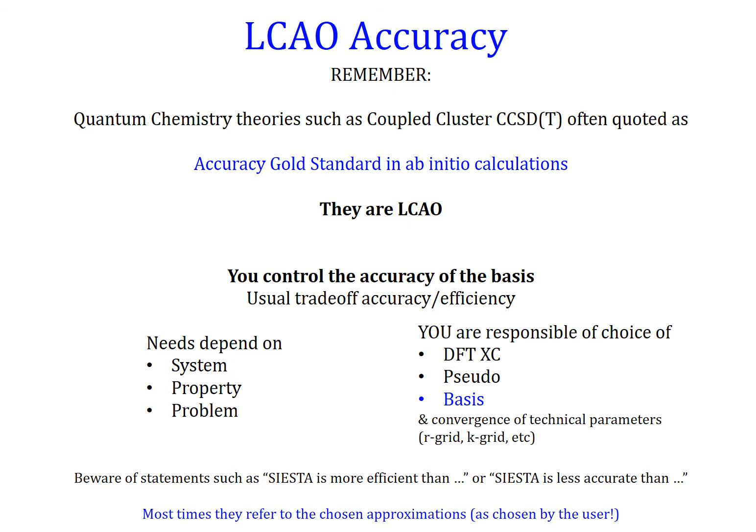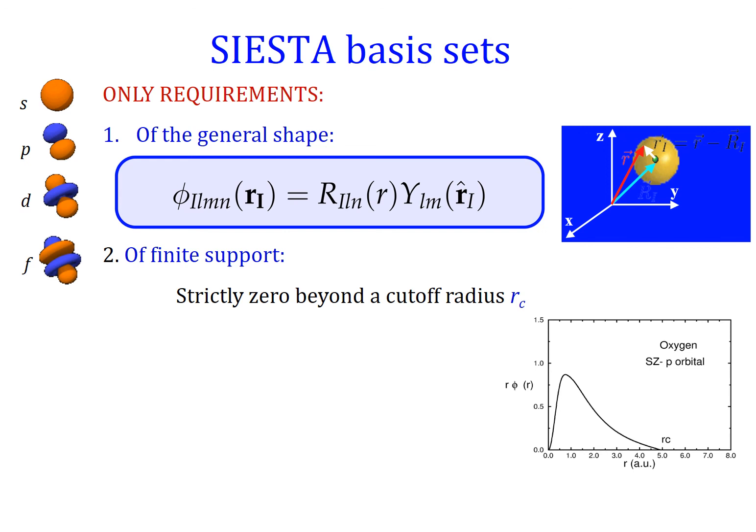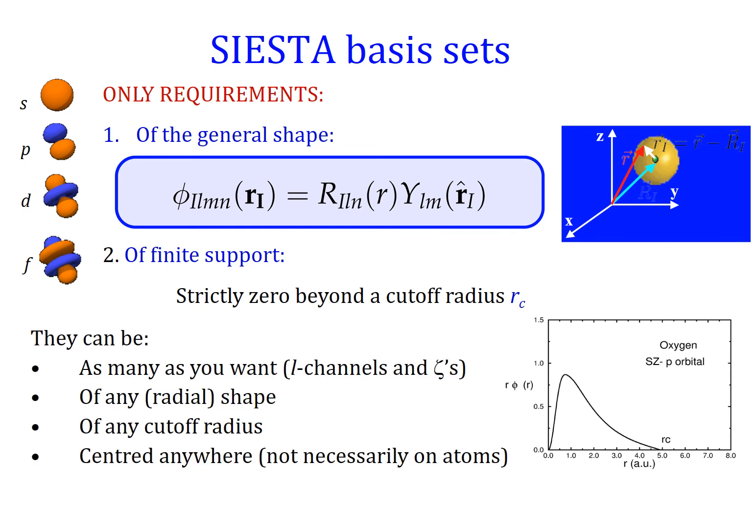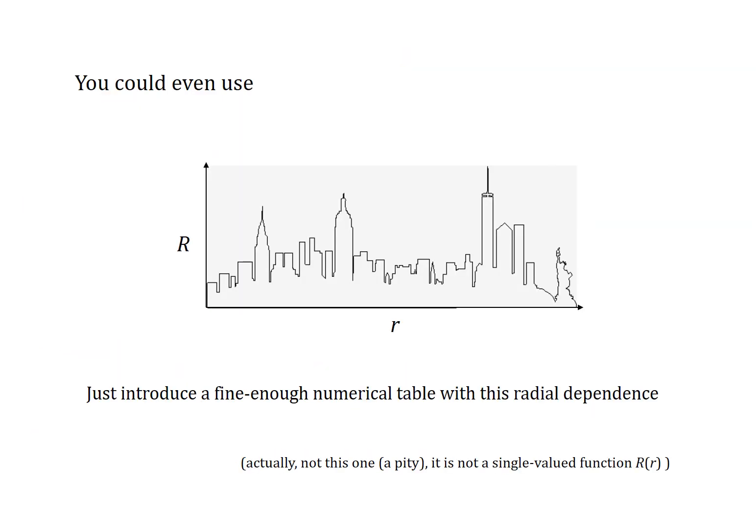The SIESTA basis sets themselves have only two requirements: they must be atomic-like, and they must be of finite support — meaning the wave functions must be strictly zero beyond some distance from the chosen center. Beyond that, you can use as many zeta levels and l-channels as you want, polarization functions of any radial shape, any cutoff radius you want, and they can be centered anywhere — even in principle using a radial shape like the one shown here.